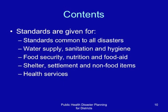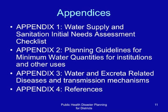The standards also include appendices. A water supply, sanitation, and emission needs assessment checklist is provided. Planning guidelines for minimum water quantities for institutions and other uses are provided. Water and excreta-related diseases and transmission mechanisms are also covered in an appendix. The standards also give references.